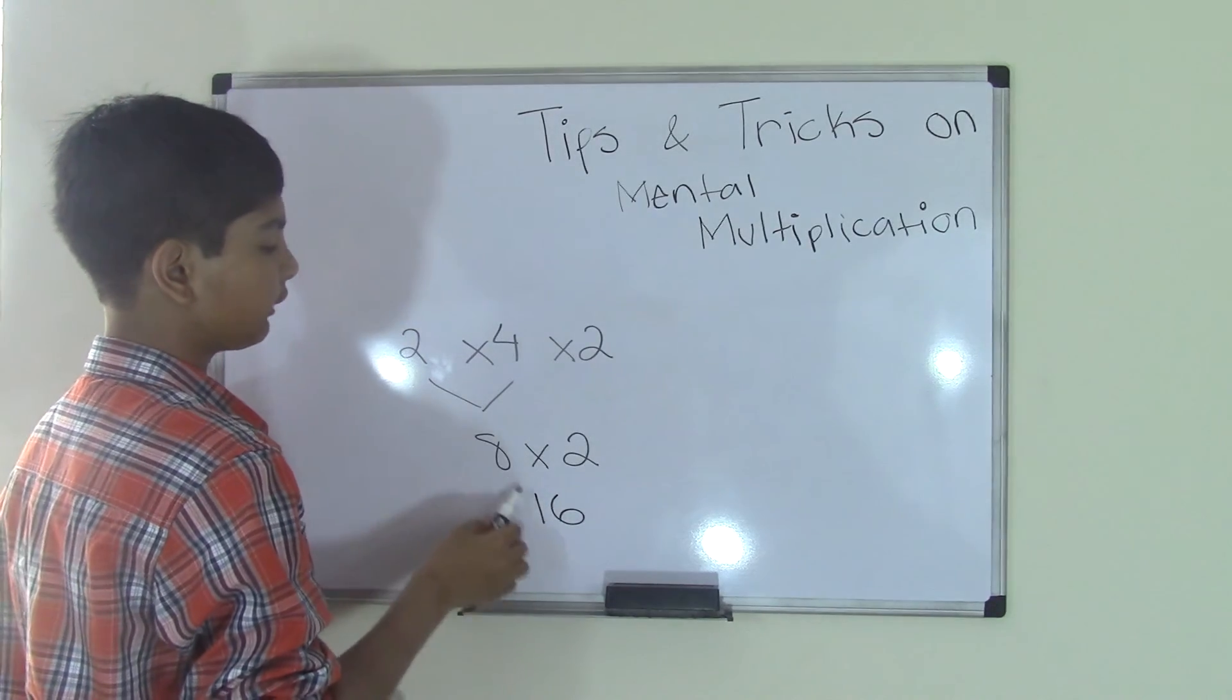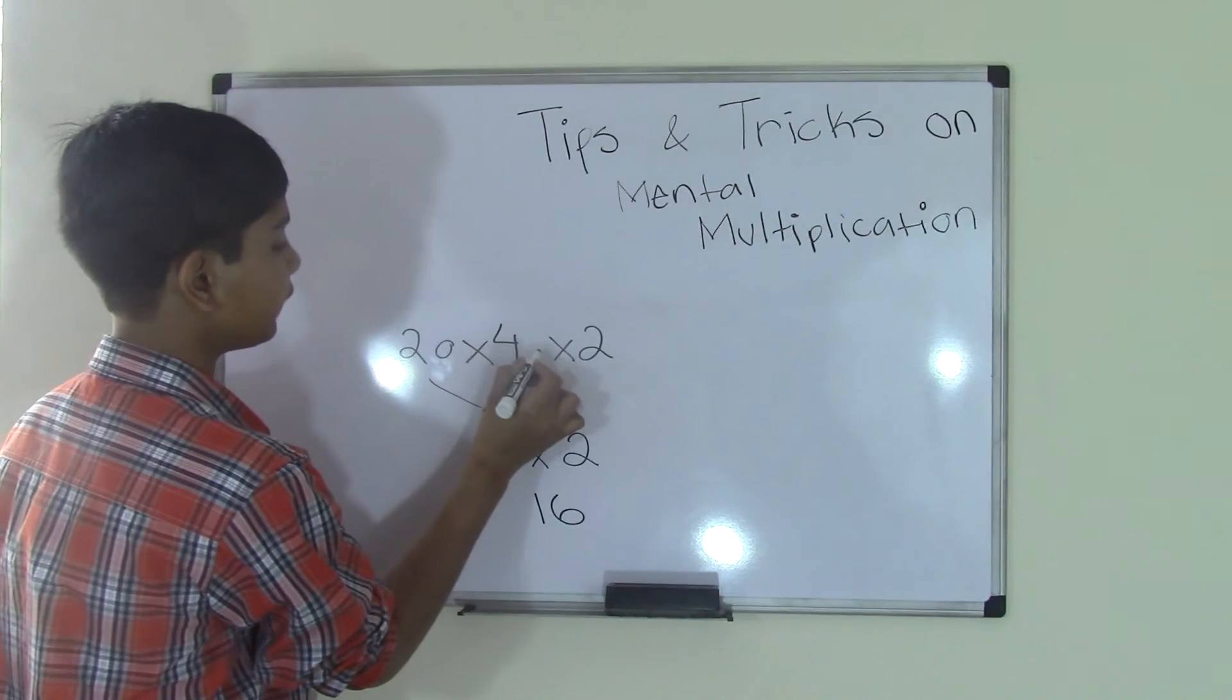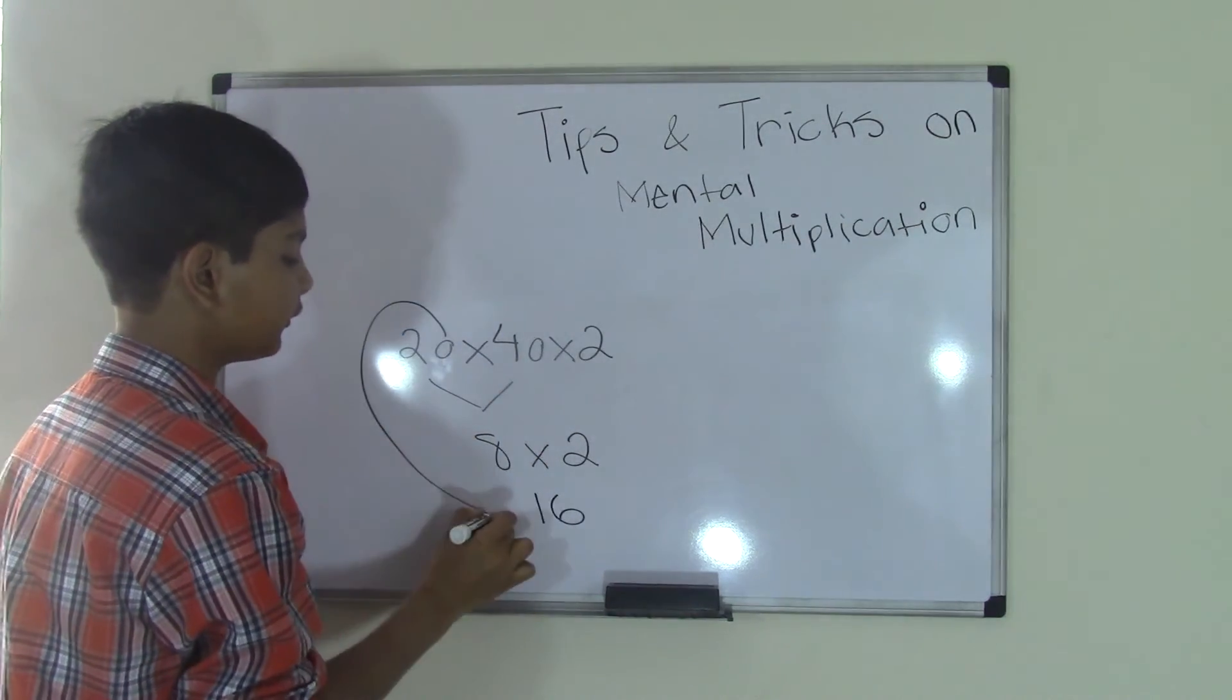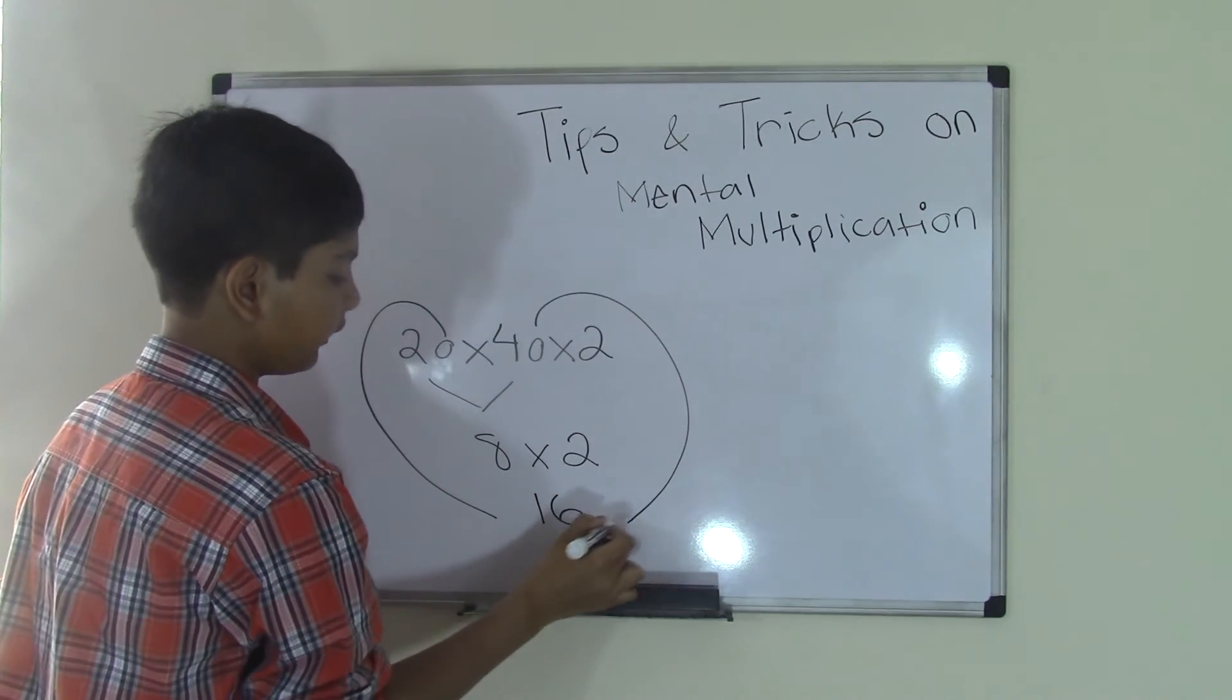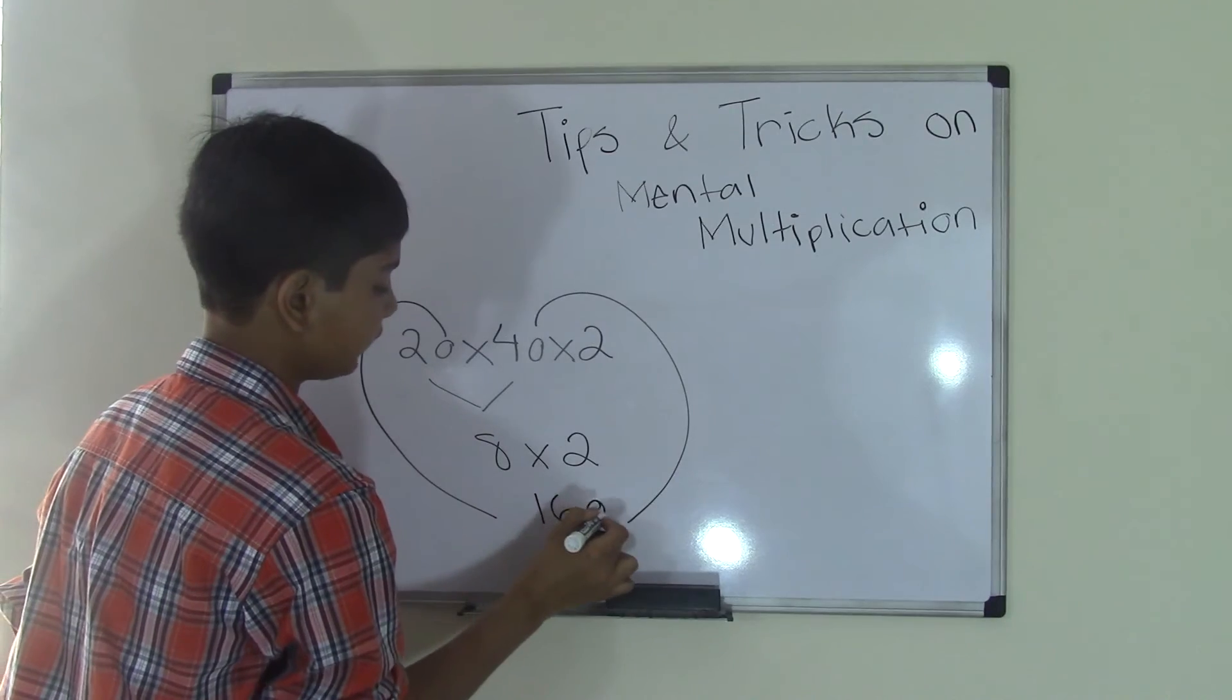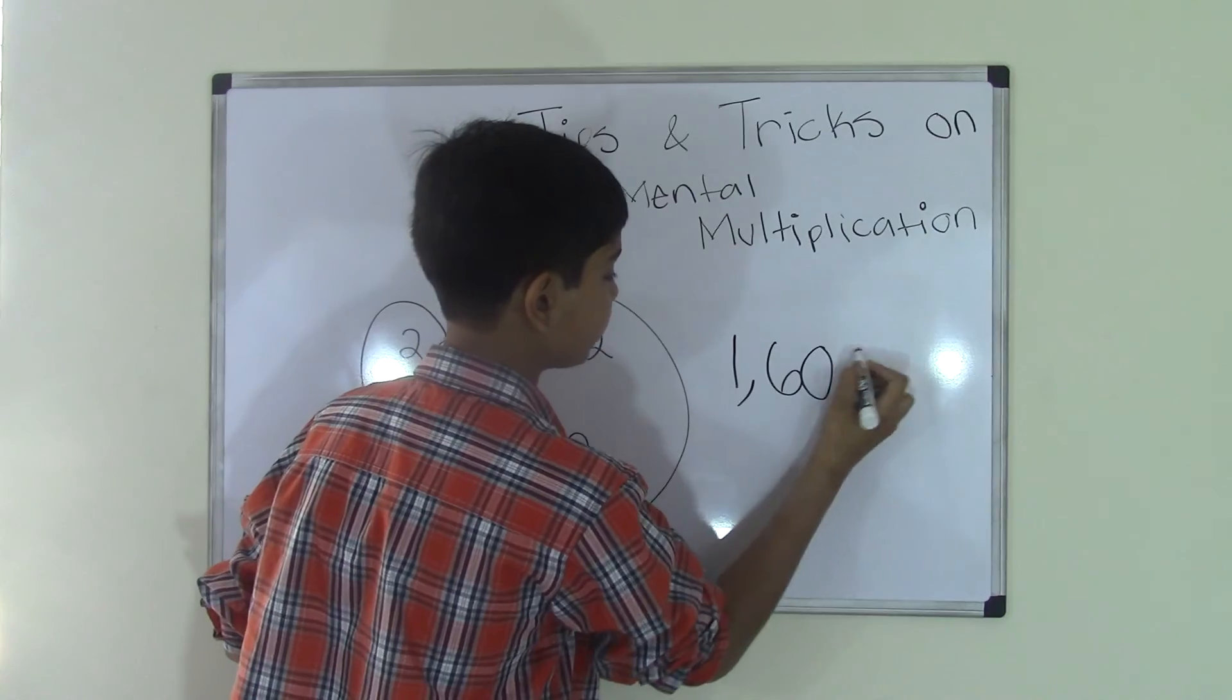Now that we got 16, we can go ahead and add the zeros. We know that 2 has a zero and the 4 has a zero, so that will be 20 and 40. We can just add the zeros in our product. We go ahead and add the one zero from the 20 and the other zero from the 40, and we get a product of 1,600.